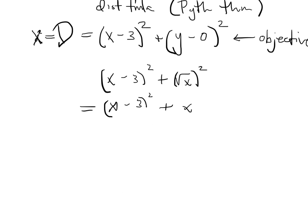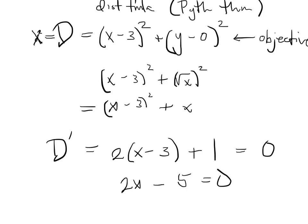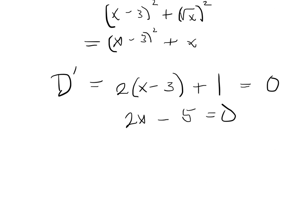At this point, it should be incredibly routine. The derivative is 2(x minus 3) plus 1. Set that equal to 0. You should pause it and solve this yourself. But the answer ends up being x equals 5 halves.